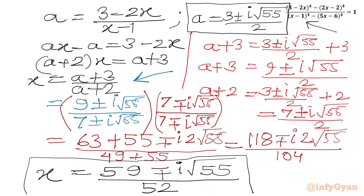So we have one real solution x equal to 4 over 3, and two complex solutions x equal to (59 plus or minus i root 55) over 52. I hope friends you will like this video. Thank you so very much for watching — don't forget to like, share, and subscribe. Bye-bye.